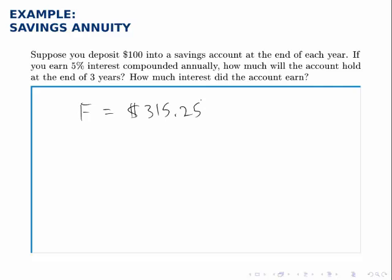that means we deposited a total of $300. The account holds $315.25. So that difference, the $15.25, has to be the amount of interest that we earned. And the interest calculation is just that simple. We can calculate how much the account holds at the end, how much we deposited, and the difference between those two is the interest that the account earned.